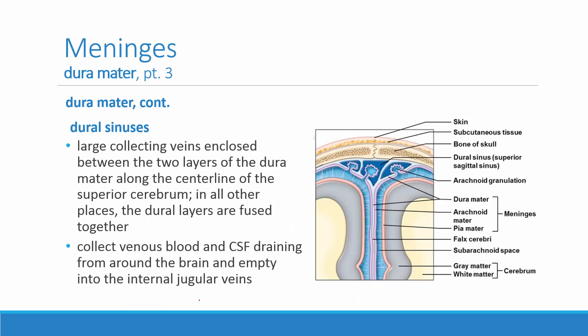Along the midsagittal line at the very most superior portion of the skull are the dural sinuses. Here, two layers of the dura mater are separated from each other, enclosing a space called the dural sinus. This is where the venous blood draining from the brain collects and then empties down into the internal jugular veins at the neck region.